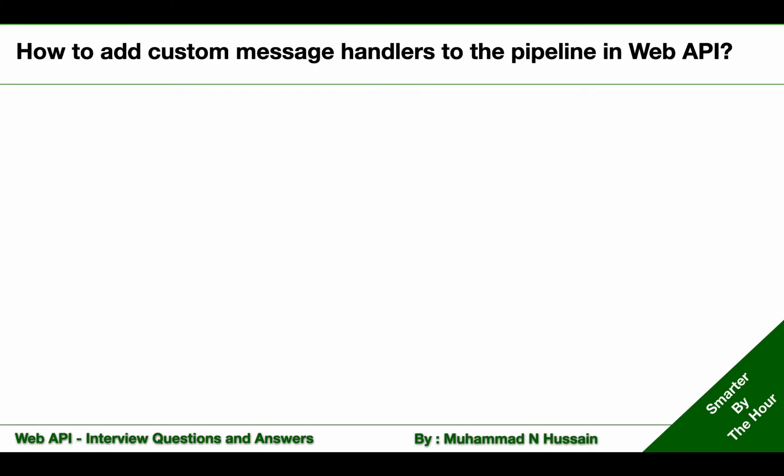How to add custom message handlers to the pipeline in Web API? Some web services require clients to include an API key in their requests. I will take that as a requirement in this example and show you how we can create a custom message handler to check the request for a valid API key, and then how we can add that custom message handler to the pipeline in Web API.